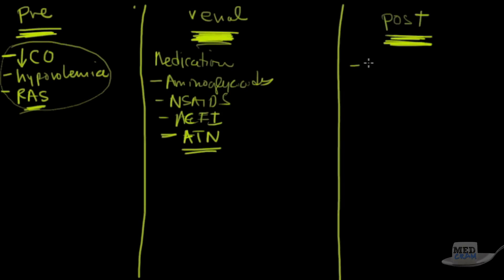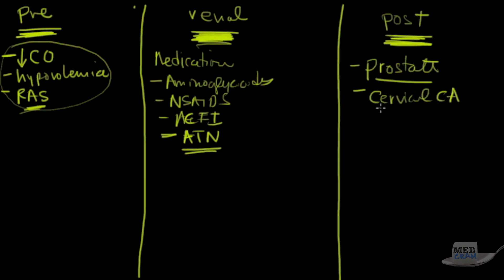Post-renal failure is relatively straightforward — the most common cause is an enlarged prostate in men, which chokes off the urethra so the bladder can't empty, backing up into the ureter and causing hydronephrosis. Other causes include cervical cancer spreading to the ureter, tumors, and kidney stones — anything blocking the body's ability to excrete urine.